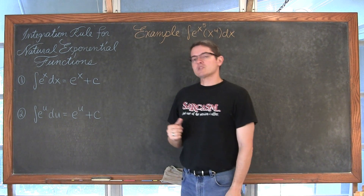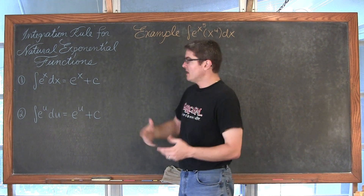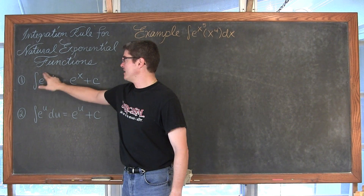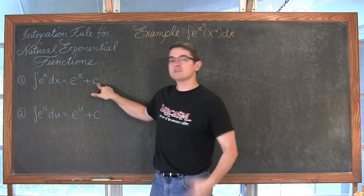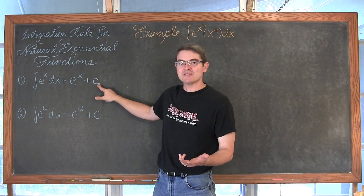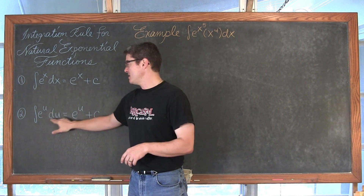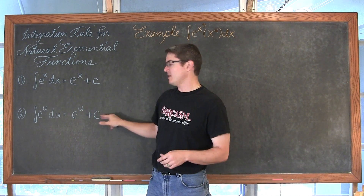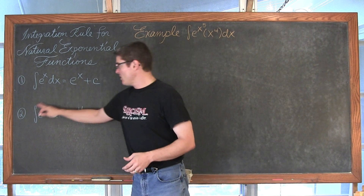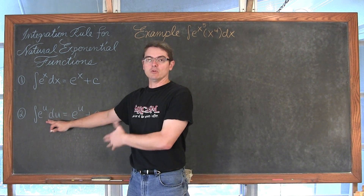The integration rule for the natural exponential function: the derivative of e to the x is itself e to the x, so we have the same relationship with integration. The indefinite integral of e to the x dx is e to the x plus c. Most of our problems are going to be more sophisticated, so we use u-substitution. The indefinite integral of e to the u du is equal to e to the u plus c. We just have to find the u-substitution that allows our problem to exactly fit this rule.